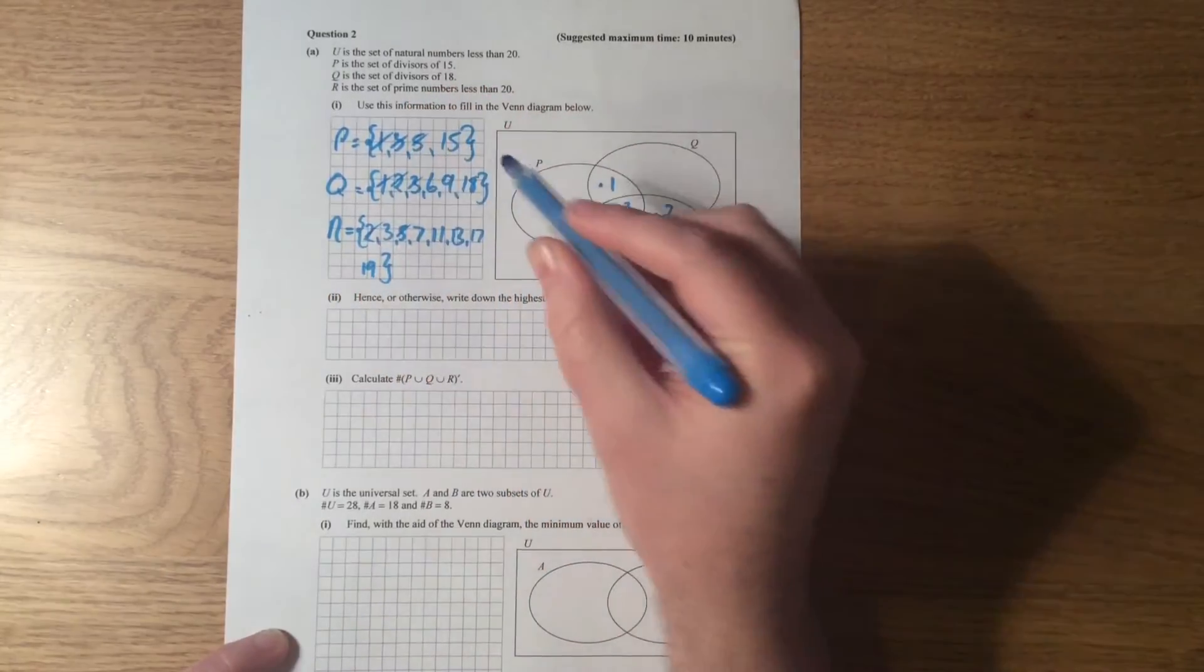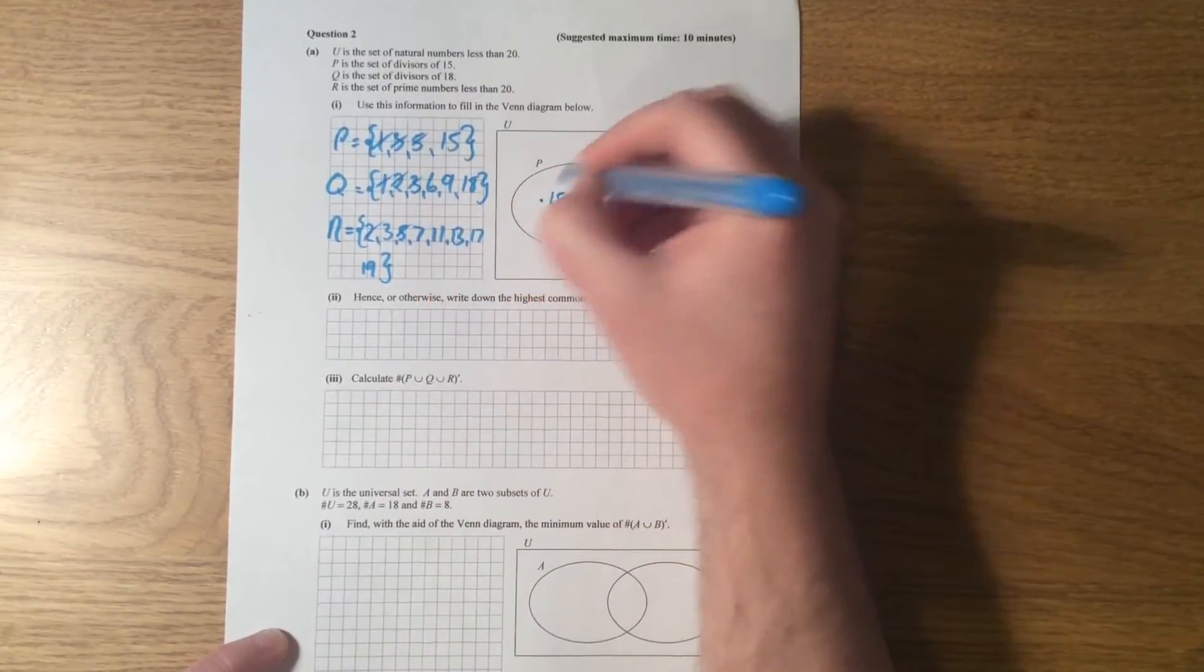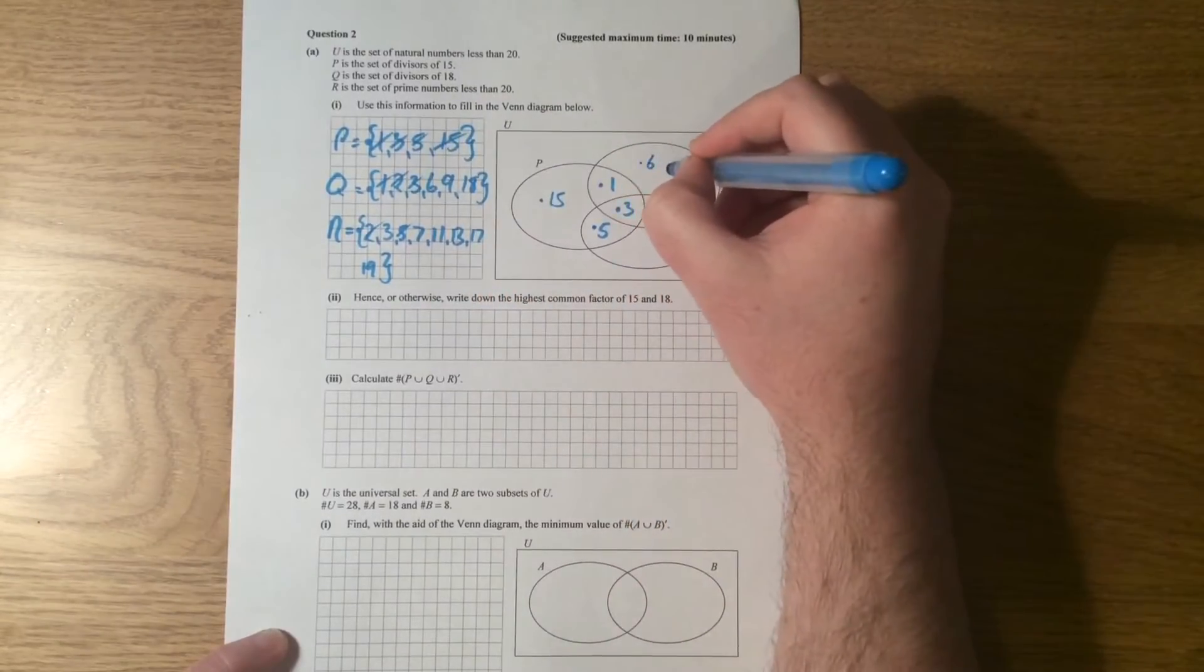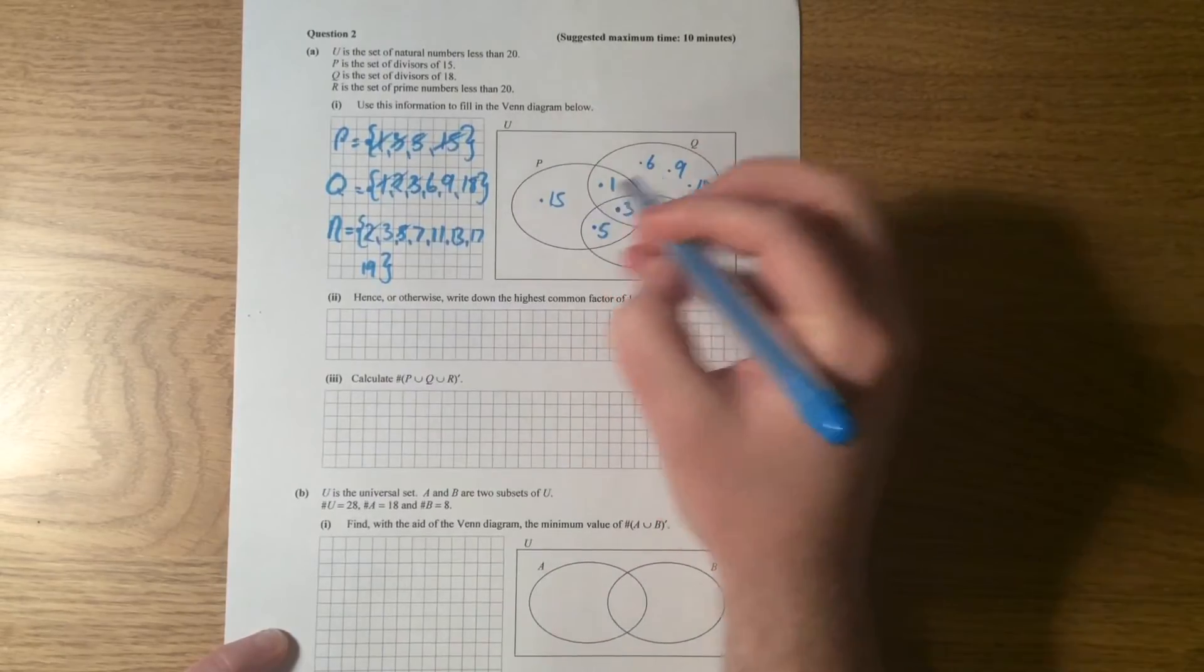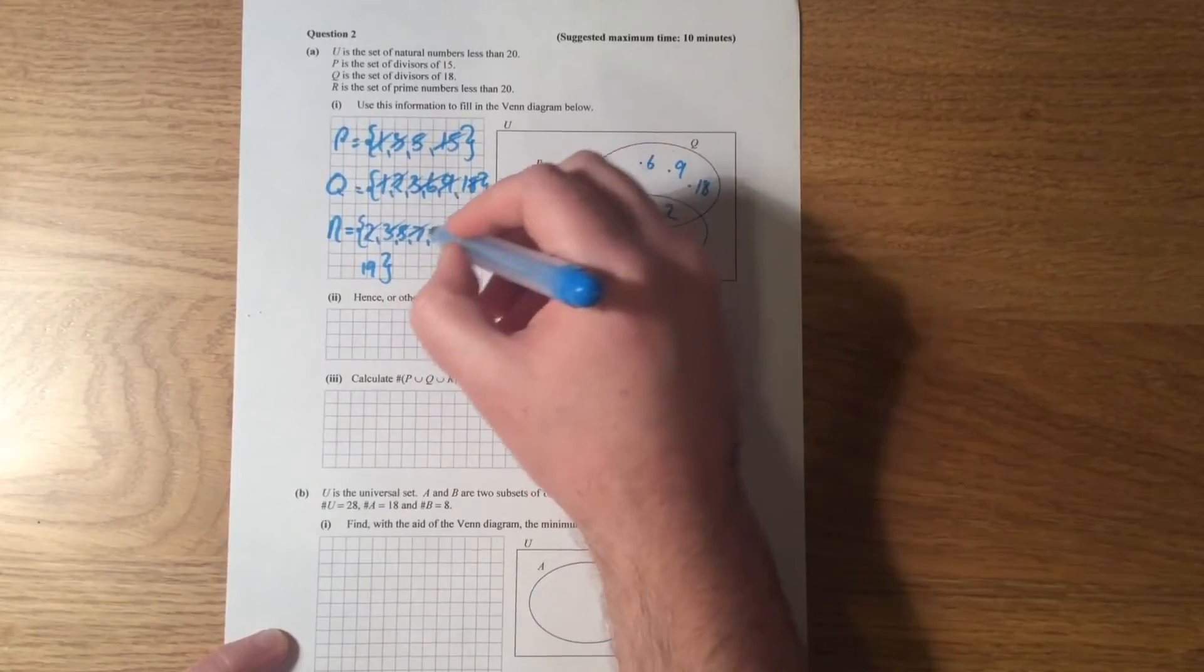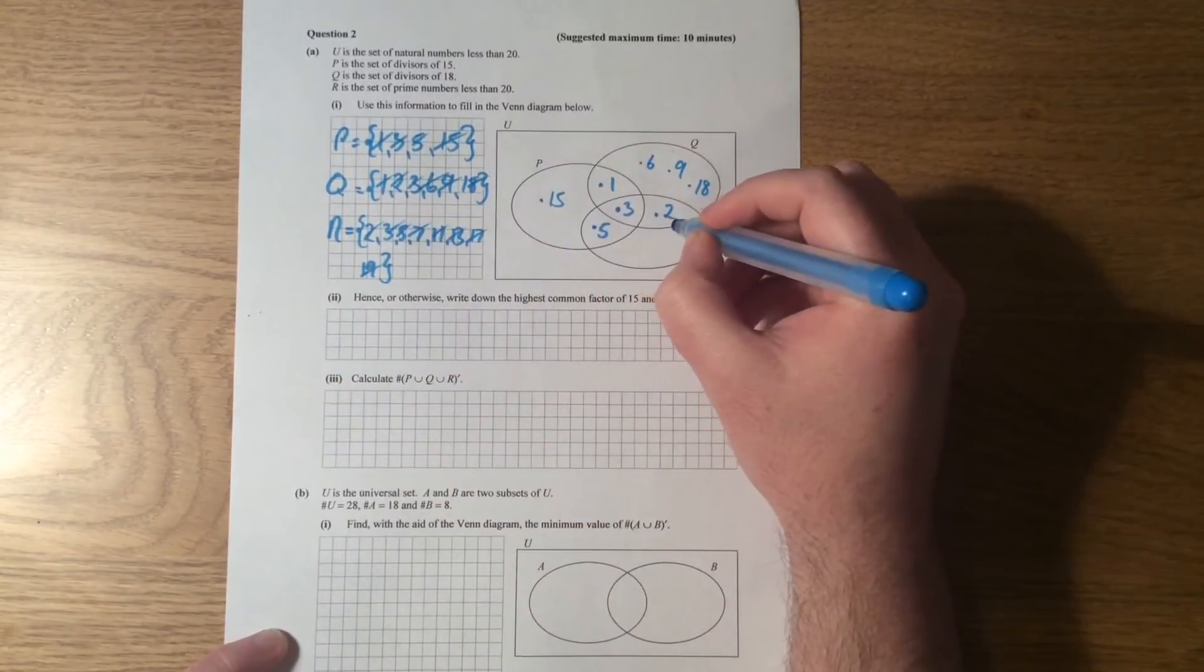And then it's just a matter of—okay, 1, 3, 2, and 5—they're all gone. So let's have a look. For P, 15 is the only number left here. For Q, I have 6, 9, and 18.